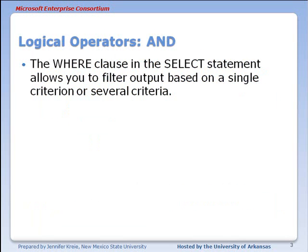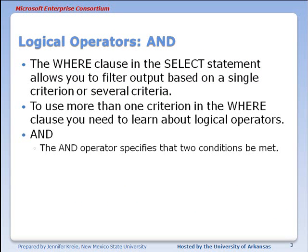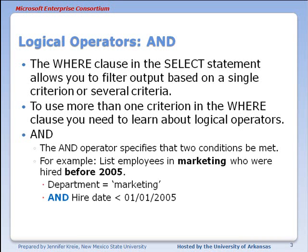The WHERE clause allows you to filter output based on a single criterion or several criteria. If you're going to have more than one criterion, you will need to use logical operators. For example, the AND operator specifies that two conditions must be met. You might ask for output from the database that lists employees in the marketing department who were hired before 2005. The two conditions to be met are department equals marketing and the hire date is prior to January 1st of 2005.